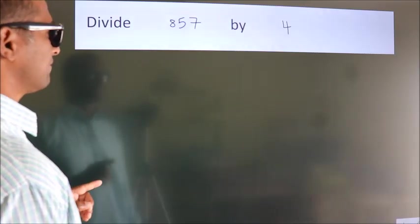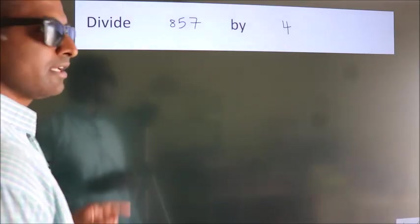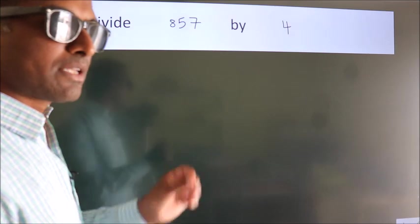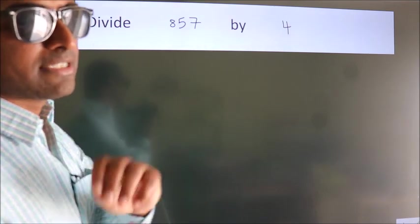Divide 857 by 4. To do this division, we should frame it in this way.